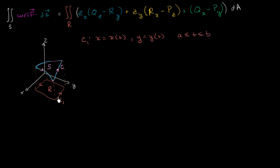So maybe when t equals a, it sits right here. And then as t gets larger and larger, it goes all the way around. And eventually, when t equals b, it gets to that exact same point. So that's our parameterization right there.